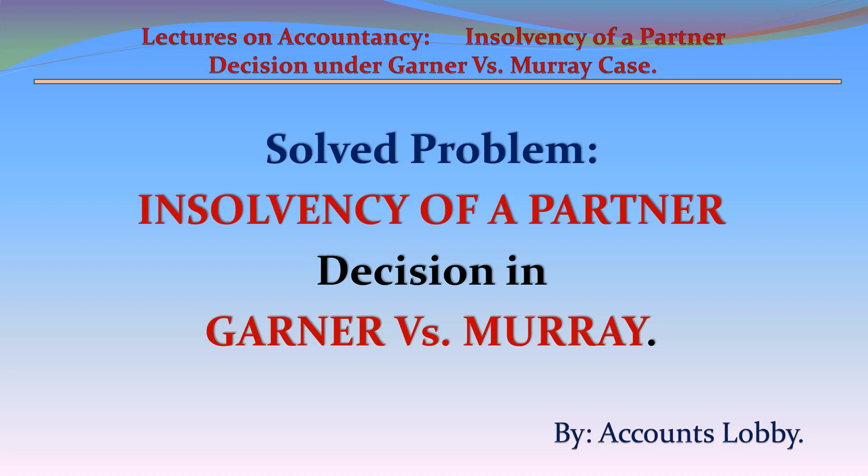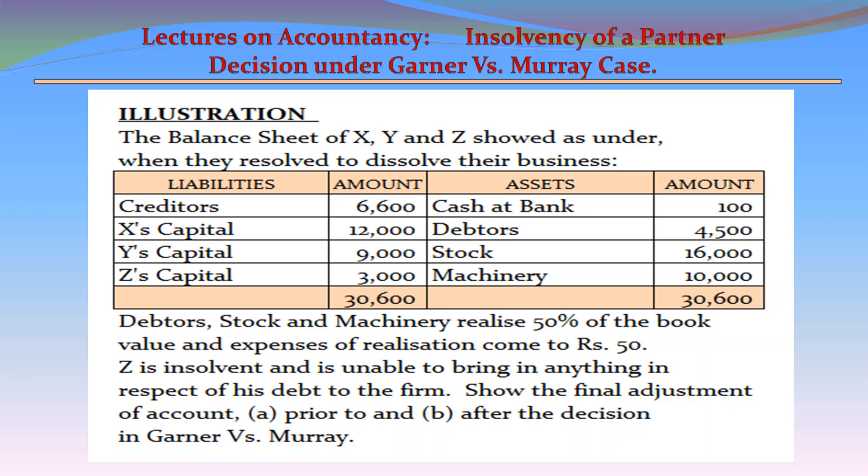Solved Problem: Insolvency of a Partner — Decision in Garner vs. Murray. The balance sheet of X, Y, and Z showed as under, when they resolved to dissolve their business.